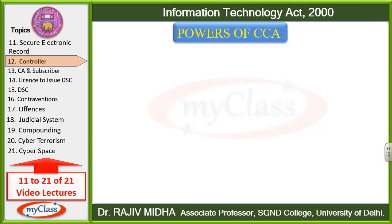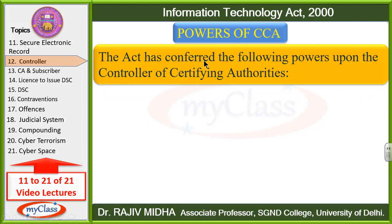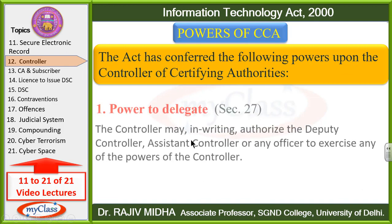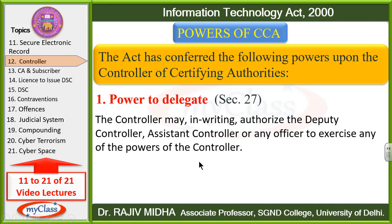The powers of CCA: The act has conferred the following powers upon the CCA. The first one is power to delegate — Section 27. The controller may in writing authorize the deputy controller, assistant controller, or any officer to exercise any of the powers of the controller. Controller writing ke andar deputy controller, ya assistant controller, ya kisi bhi officer ko is baat ke liye authorize kar sakta hai ki jo meri powers hain, woh tum exercise karo. So controller apni powers ko delegate kar sakta hai, transfer kar sakta hai.